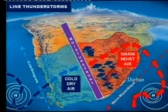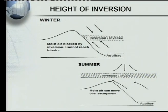You must know how these line thunderstorms occur, the role of the two high pressure systems, and the two types of air masses that these high pressure systems feed over the country, which cause the line thunderstorms.